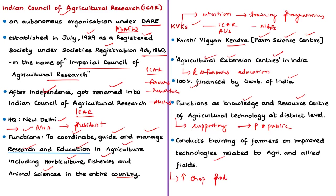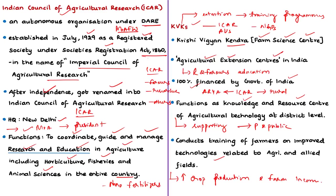KVKs also conduct extension programs including training of farmers through specific training programs on improved technologies related to agriculture and its allied fields, benefiting farmers in terms of increased crop production and farm income. The news article also mentions other ICAR initiatives: ICAR is developing nano fertilizers and nano pesticides to promote organic farming and reduce the use of pesticides and fertilizers. ARIA — Attracting and Retaining Youth in Agriculture — is also being implemented by ICAR, aiming to improve rural bioeconomy and attract youth into agriculture. With this we have come to the end of analysis of this news article.